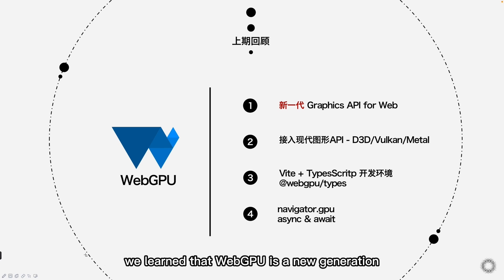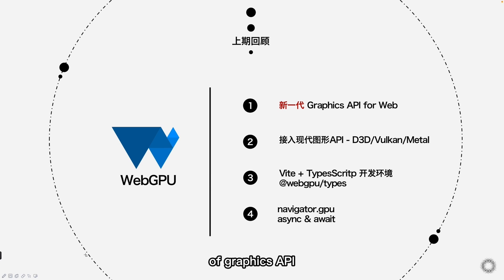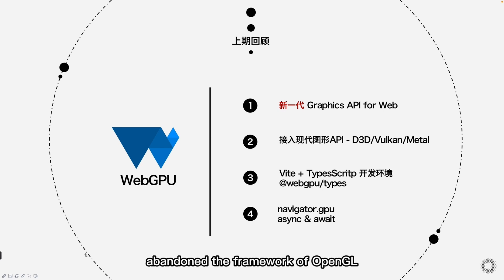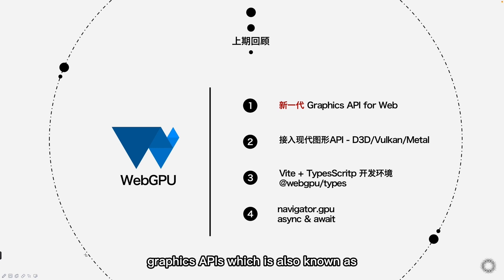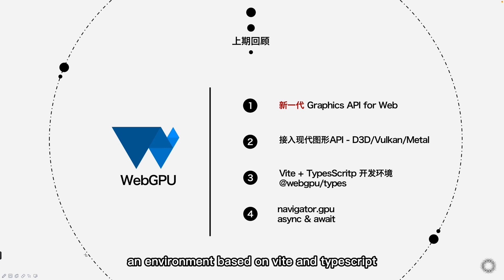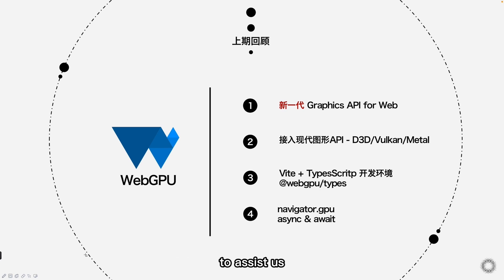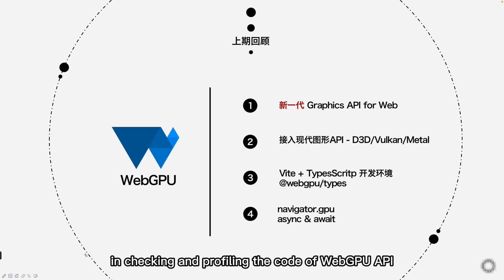First of all, we learned that WebGPU is a new generation of graphics API proposed by W3C. The biggest difference from the current WebGL standard is that WebGPU has abandoned the framework of OpenGL, but has access to modern graphics APIs, also known as Direct3D, Mantle, and Vulkan. Secondly, we introduced a development environment based on Vite and TypeScript, especially the official definition package of WebGPU in TypeScript to assist us in checking and profiling the WebGPU API.